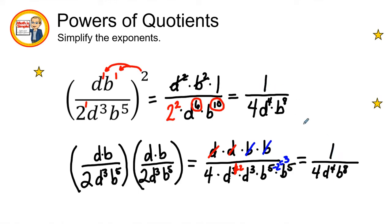So there it is — I've either used the distributive form or expanded out, and both give the same answer. Learning the distributive form is important because if the exponent is larger than 2, there's going to be a lot of expanding to do.